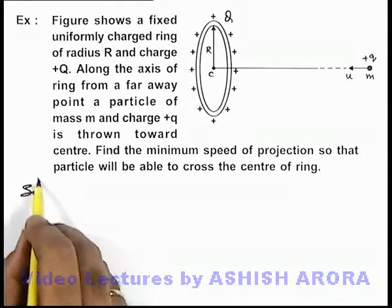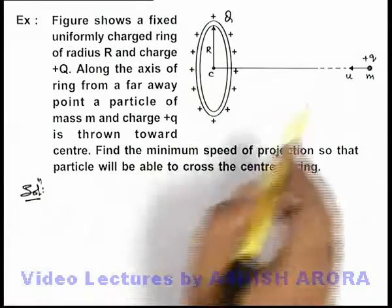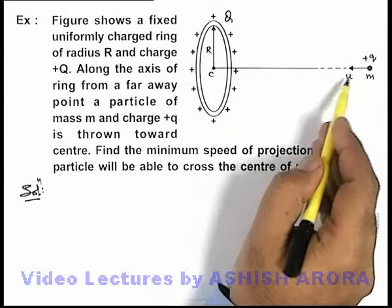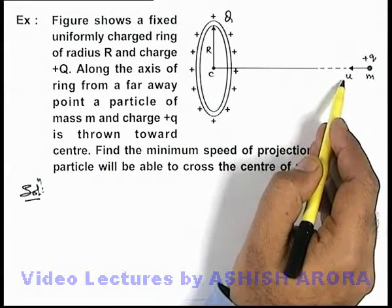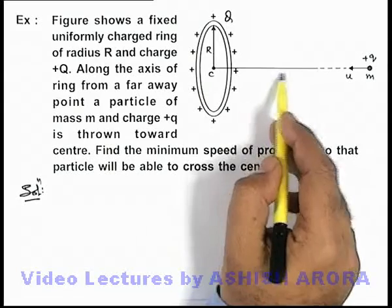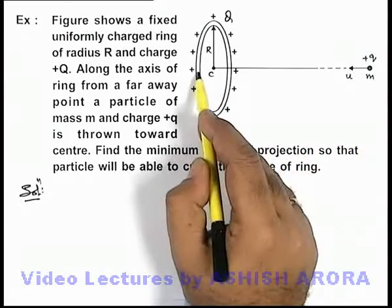Here we can analyze the situation that when the particle will get closer to the ring due to repulsion, its speed decreases. And if before reaching the center its speed becomes zero, then it'll return and it'll not be able to cross the center.